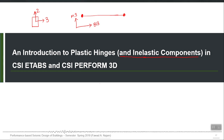This particular hinge property M3-theta3 has two main components. One is the backbone curve and the other is the cyclic rule — how it will unload and reload from any particular location. There are different types of rules available, which we call hysteretic behavior.